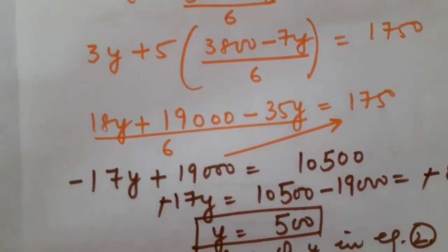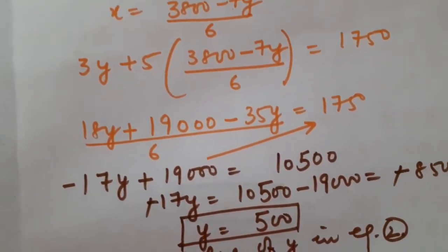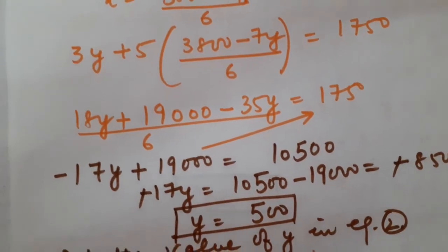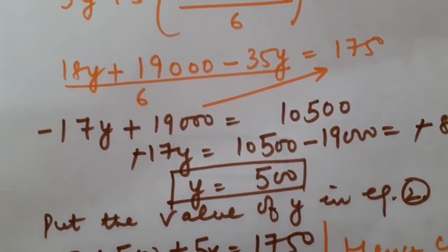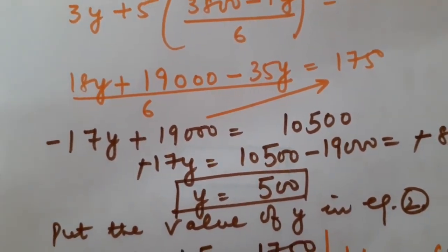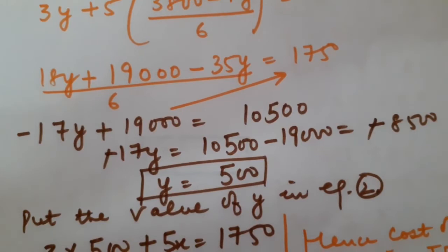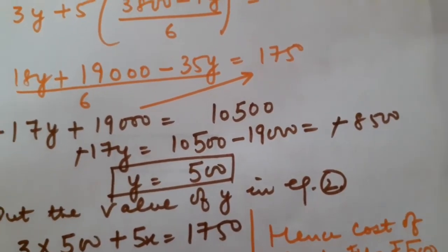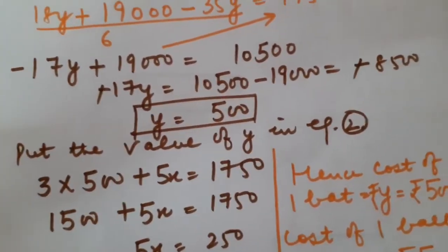After taking LCM and cross multiplying: 18Y plus 5 times 3,800 gives 19,000 minus 35Y equals 1,750 into 6 which is 10,500. So 18Y minus 35Y plus 19,000 equals 10,500. That gives minus 17Y equals 10,500 minus 19,000 equals minus 8,500. Cancelling both minus signs: Y equals Rs. 500.